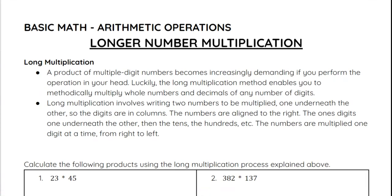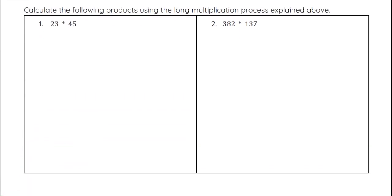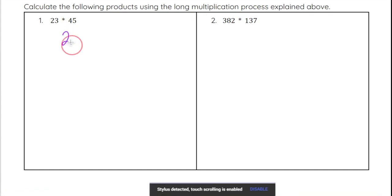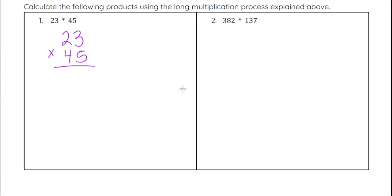For long multiplication, we write one number on top and one number on the bottom, and line up the ones, the tens, the hundreds, and so on — just like we did with addition and subtraction. Let's take a look at these two examples. First, 23 times 45. Notice I lined up the ones and the tens.